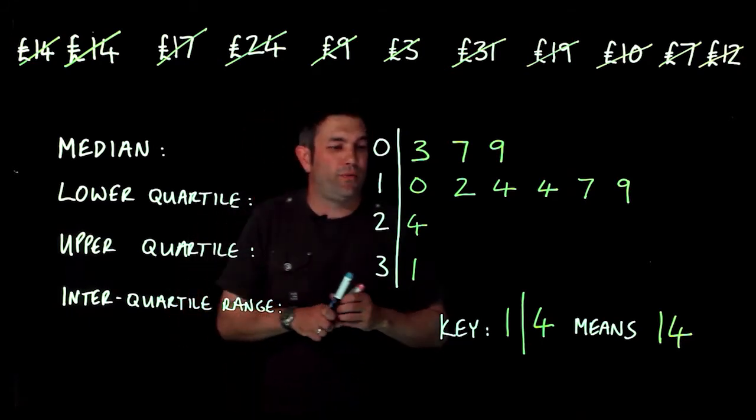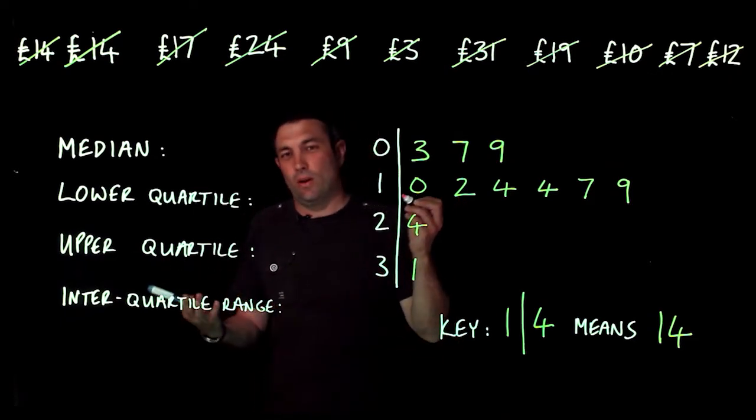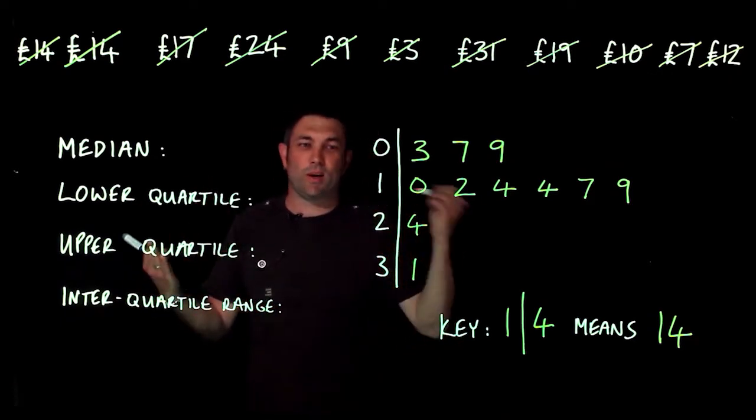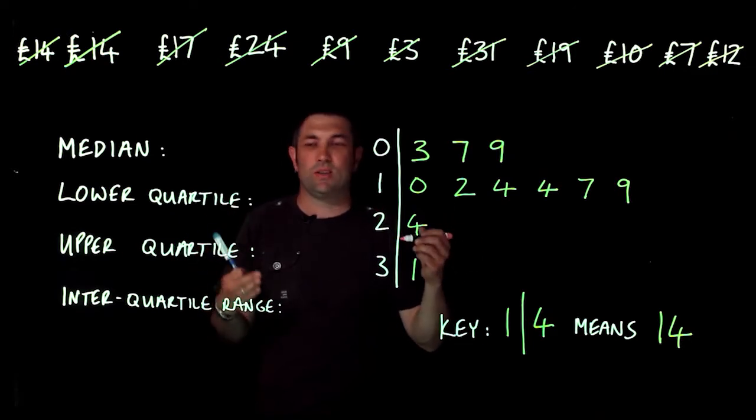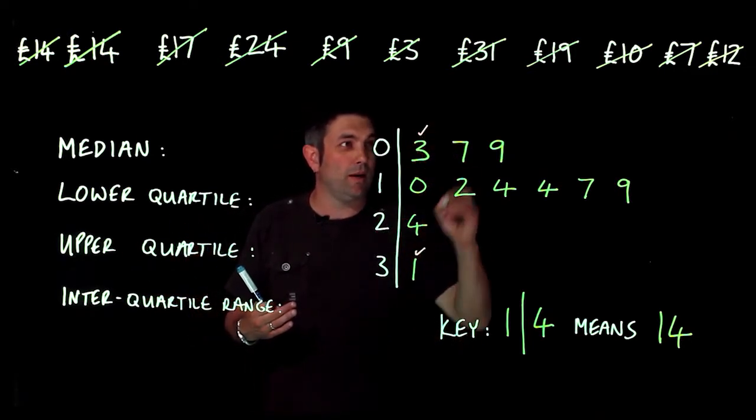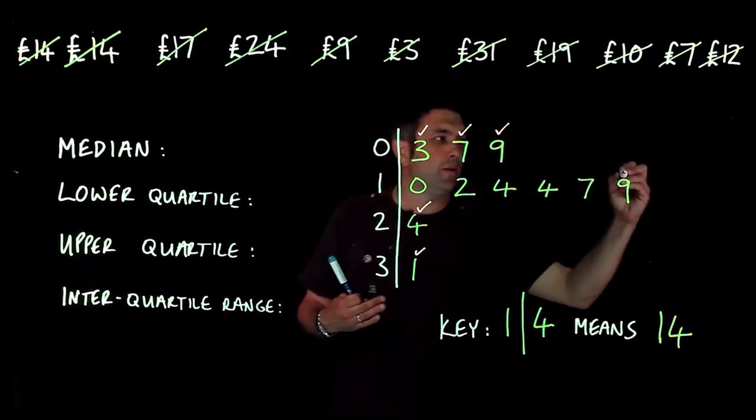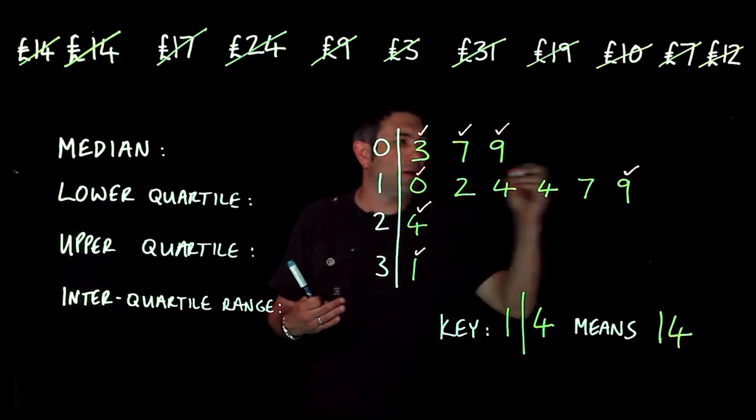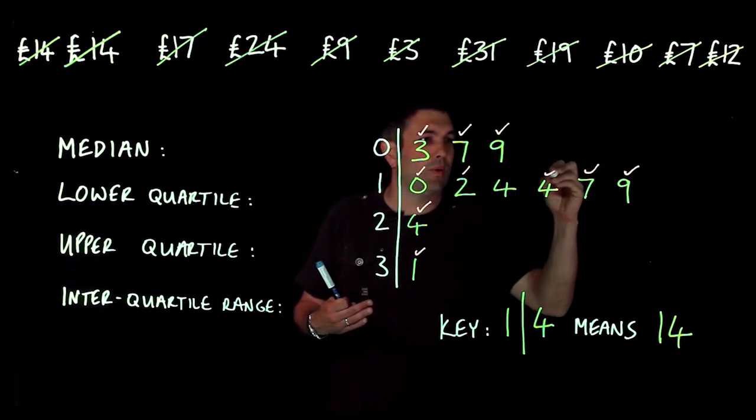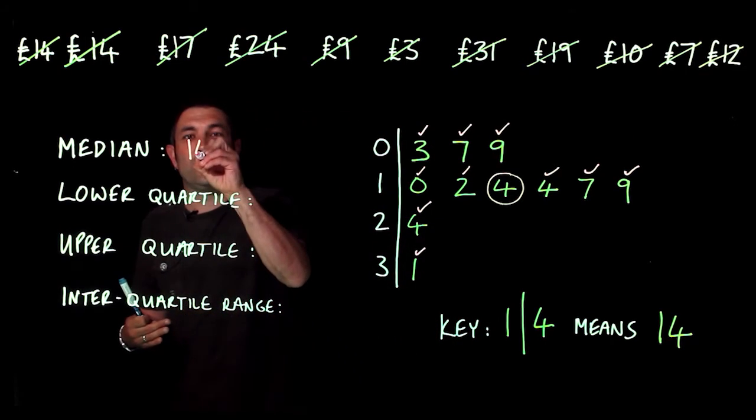For the median, we need to find the middle number. Like before, we're going to cross off one from the beginning and one from the end repeatedly until we're left with one or two in the middle. Crossing off from each end alternately, we find our median, which is 14.